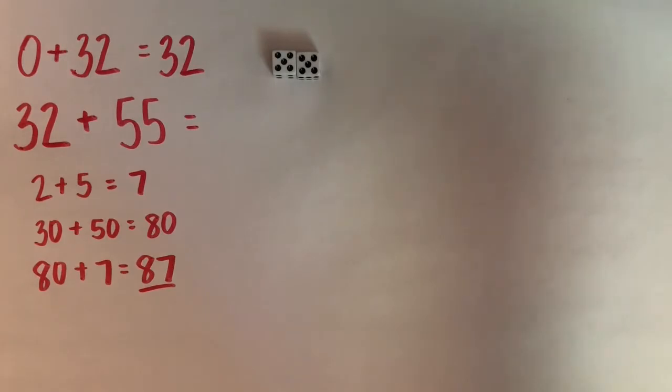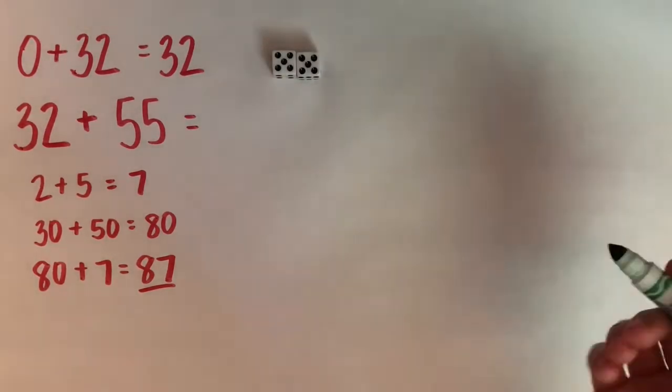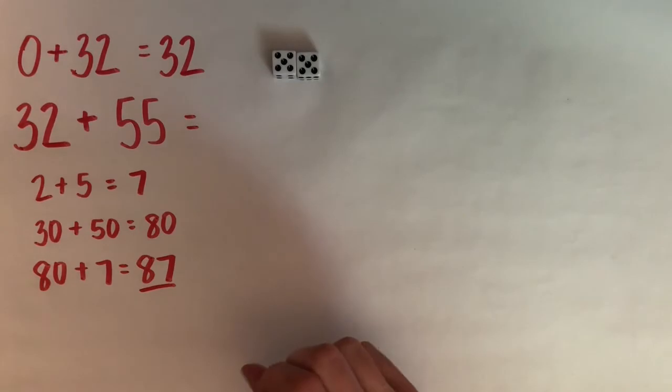Okay now it's my partner's turn. So they'll roll and add their numbers together. Now let me skip back to my turn.